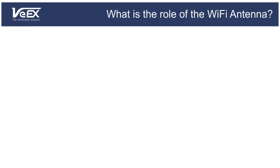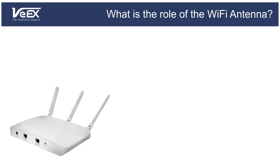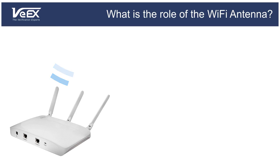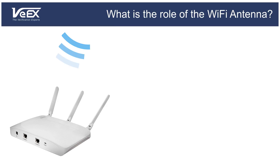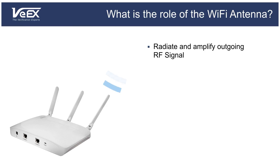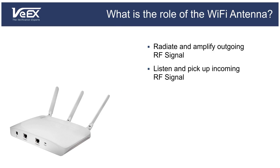Wi-Fi network devices transmit radio frequencies through the air, as well as receive and decode incoming signals. Wi-Fi antennas are a critical component of this communication process because they're used to amplify and radiate the outgoing signals, as well as detect and gather the incoming signals.